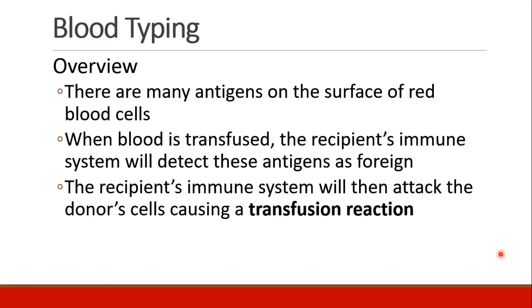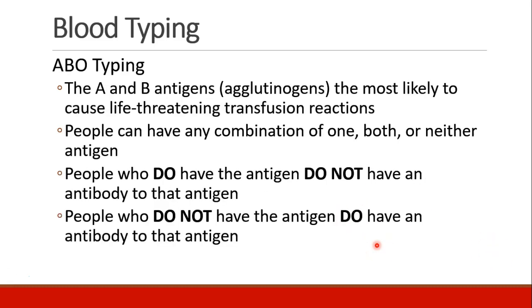There are a lot of different antigens on the surface of red blood cells. When blood is transfused into a recipient, the recipient's immune system detects these antigens as foreign and can lead to an allergic reaction or some other immune attack. This is called a transfusion reaction. As a result, we've learned how to do ABO typing. The A and B antigens are called agglutinogens, which is a specific type of antigen. They're the most likely antigens to cause life-threatening transfusion reactions.